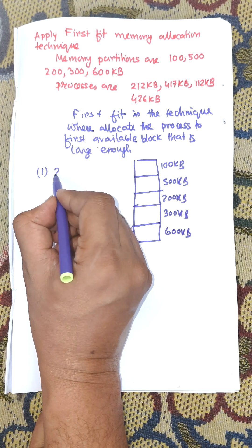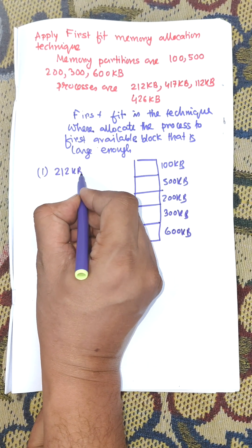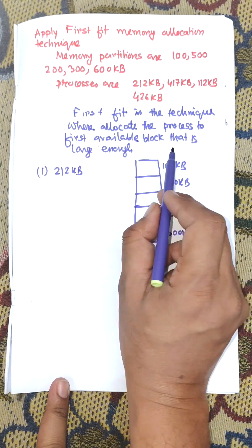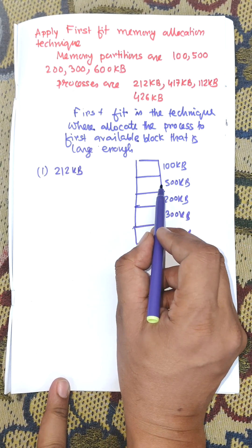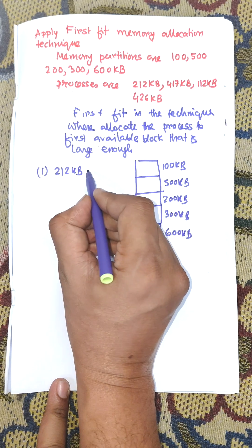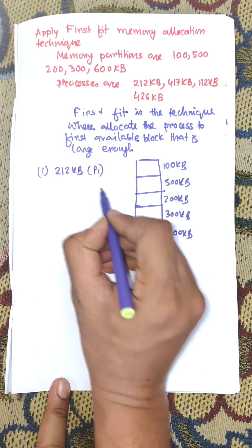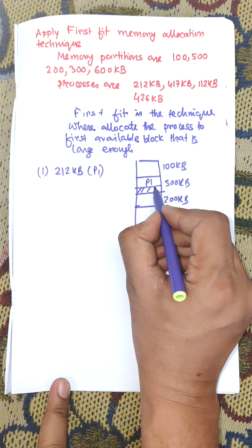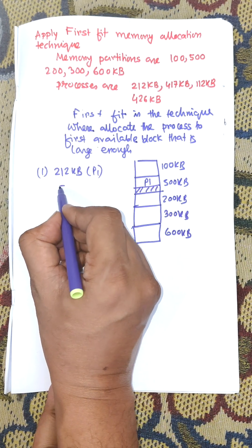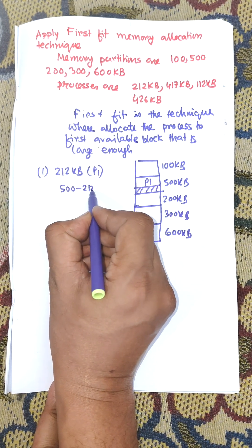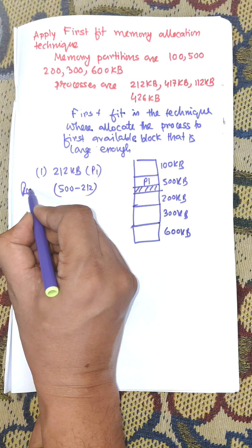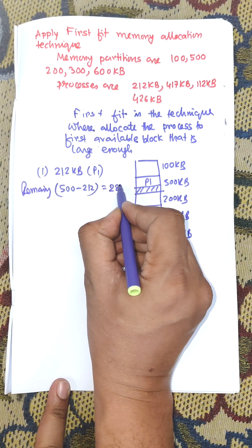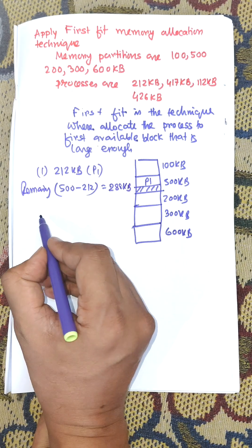The first process P1 is 212 KB. It will allocate in the first available block large enough, which is the 500 KB partition. P1 is allocated within the 500 KB block and the remaining memory is 500 minus 212, equal to 288 KB.